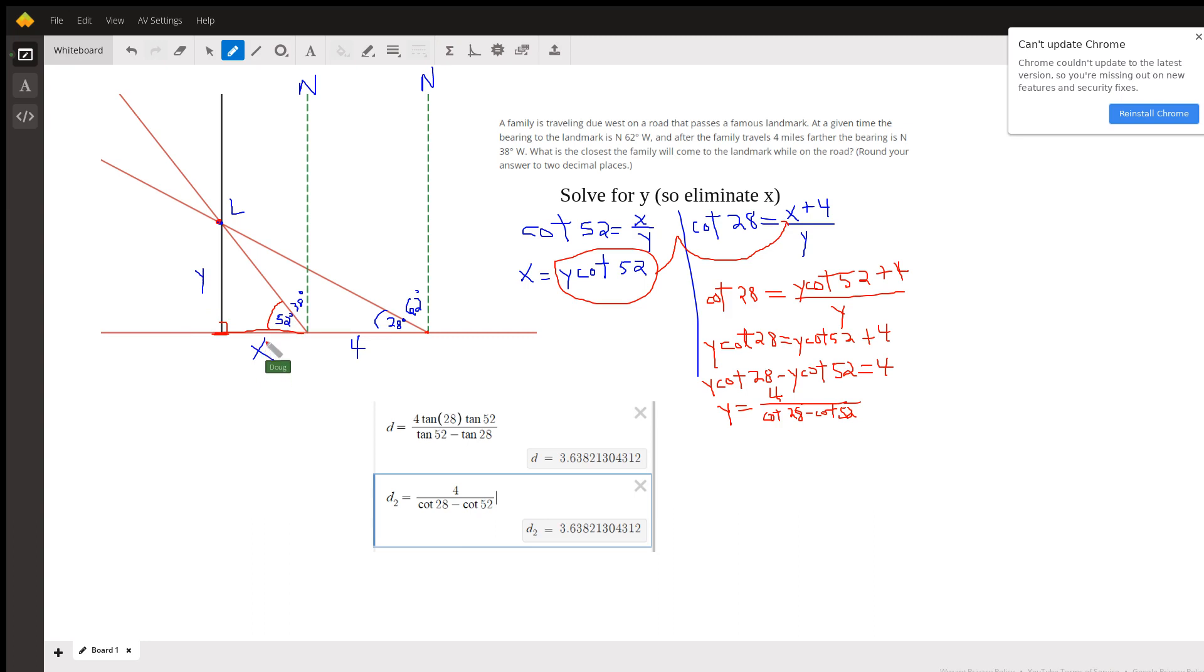Or you could find this angle right here, which is the complement of 52, which would be 38, and you could say the tangent of 38 equals x over y. The idea is that since we want to end up with y by itself, we probably want to try to eliminate the x. So if you use cotangent, you end up with these two equations right here.